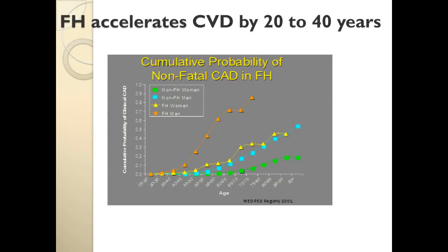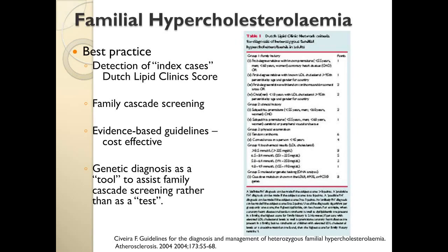This is a golden opportunity to prevent premature and avoidable cardiovascular disease. Here you see men and women with and without familial hypercholesterolaemia. Comparing the orange men with FH to the turquoise ones without, and the yellow women with FH to the green ones without, the separation along the horizontal axis is around 20 to 40 years — that's the sort of impact we're talking about. Our best practice for managing this condition is to detect as many cases as possible. When we find the first case in a family — the index case — we use the LDL cholesterol level along with clinical signs and information to calculate a score.